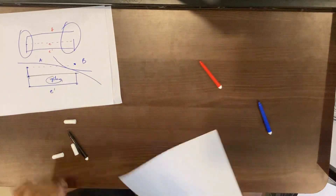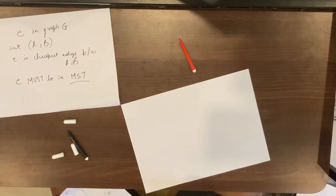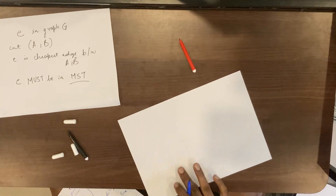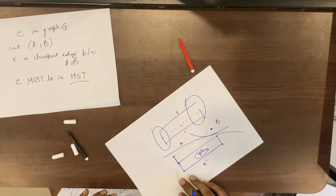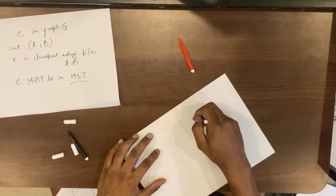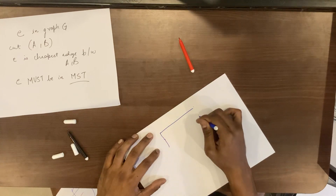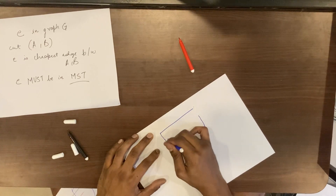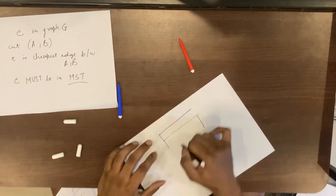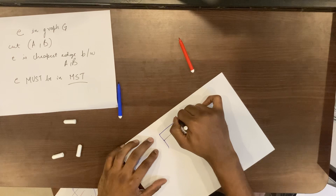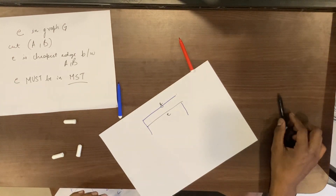How about trying it with E prime instead? Going back to the original graph and swapping E with E prime: F is intact, along with the other edges, and instead of E prime we now have edge E. Now this is okay — there are no cycles, and the graph is connected too.